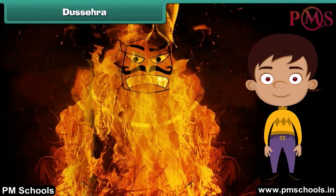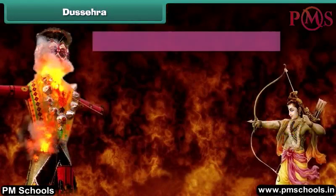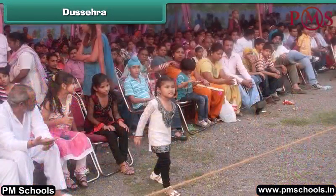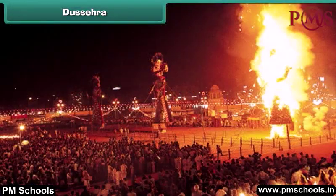Dussehra is another Hindu festival that marks the victory of good over evil. It is believed that on this day Lord Ram killed the demon king Ravan. People gather in a large field in the evening and burn effigies of Ravan, his brother Kumbhkaran, and son Meghnad.